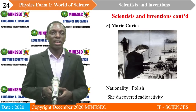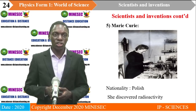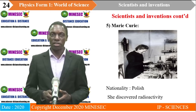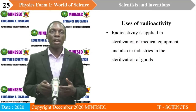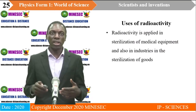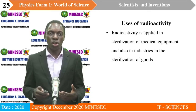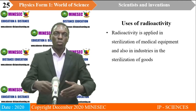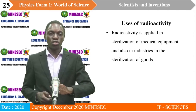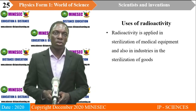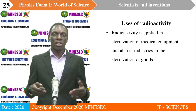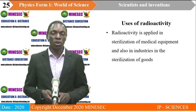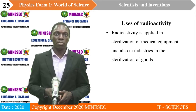Marie Curie is a lady from Poland — she is Polish. She discovered radioactivity, which has several applications. For instance, radioactivity is applied in the sterilization of medical equipment and in industries for sterilization of foods — sterilization meaning the killing of germs. When they use equipment in the hospital, they use radioactivity to destroy all bacteria on the equipment. In industry, after producing goods like cotton, they use radioactivity to kill all germs before sending them to the market.